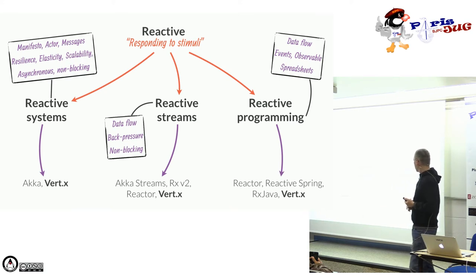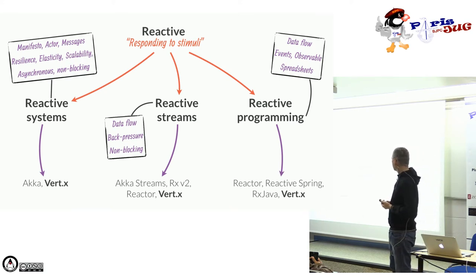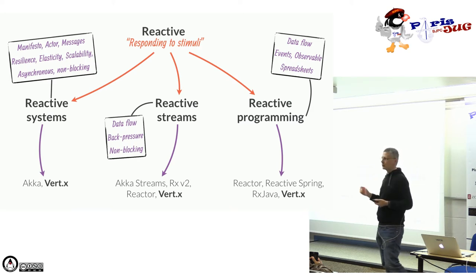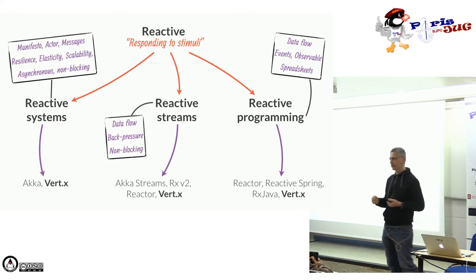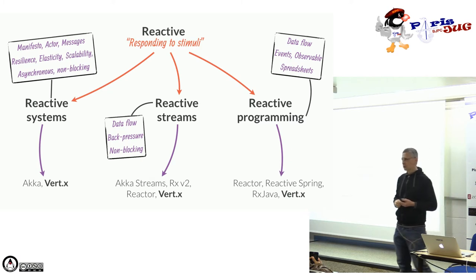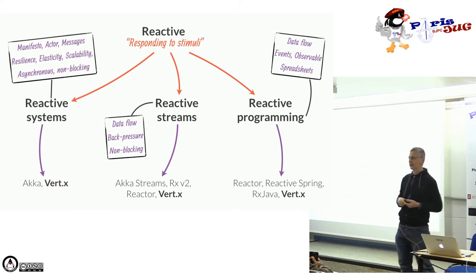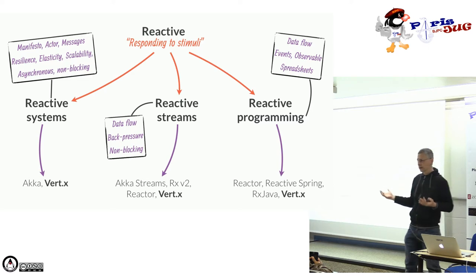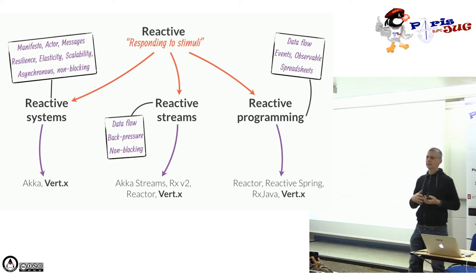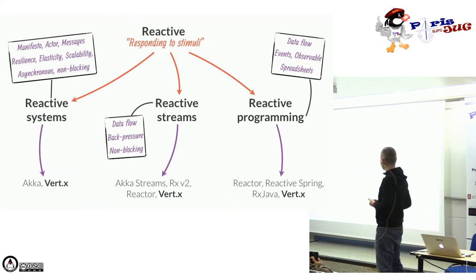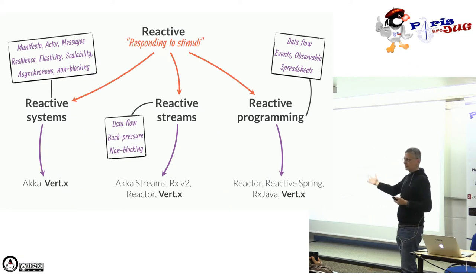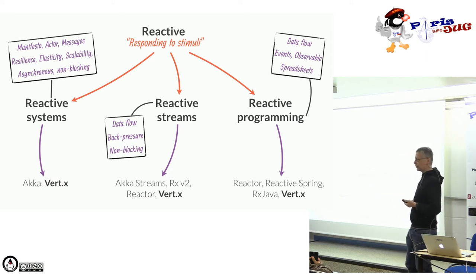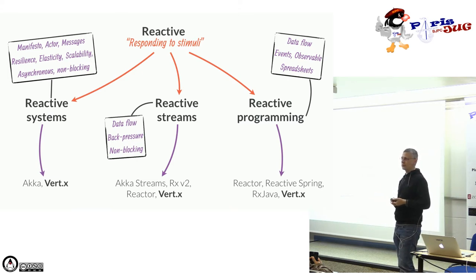Les Reactive Streams, c'est une spécification de trois ou quatre classes incluse dans Java 9 sous le nom Flow. Le but est de permettre l'interopérabilité entre systèmes réactifs : si j'utilise Vert.x et Akka, qui implémentent tous deux les Reactive Streams, je peux les utiliser ensemble et propager l'aspect réactif d'une application à l'autre. Vert.x est présent dans ces trois cas : applications distribuées, implémentation des Reactive Streams, et Reactive Programming optionnel.